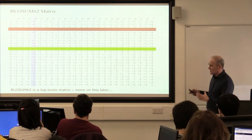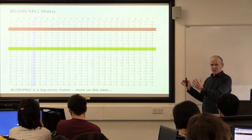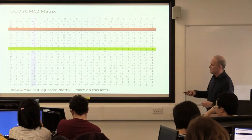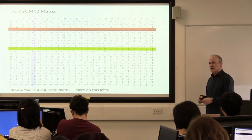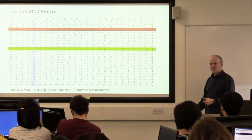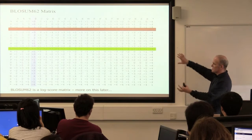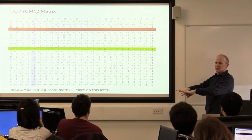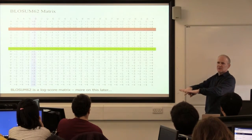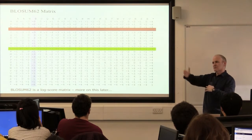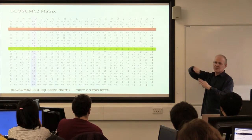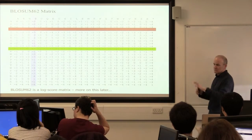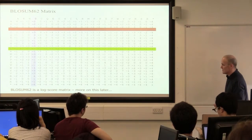In fact, the Venn diagram I showed you was generated by taking this matrix and doing multidimensional scaling — principal components analysis — which takes this 20-dimensional table and projects it into two dimensions. When you do that, the two principal dimensions are hydrophobicity and charge. That's how that Venn diagram was first generated.